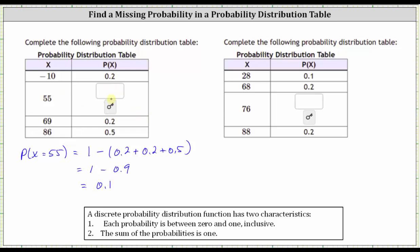So the missing probability, the probability x equals 55, is 0.1.